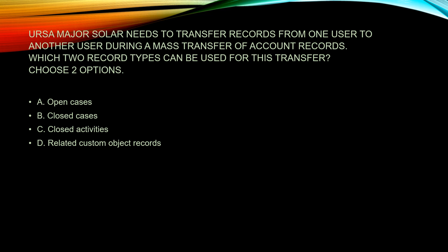So Fred quit, and we're transferring everything over to George. We can use open cases — that'll work. We can use closed cases — that'll work. But there's no option to choose closed activities when doing mass transfers. And for related custom objects: if we transfer all the open cases, the mass transfer tool will handle accounts, leads, service contracts, and custom objects. The related custom objects will follow, but you can't choose them as a direct point of transfer. So for this question, you can use open cases and closed cases to transfer accounts over — and it's correct.